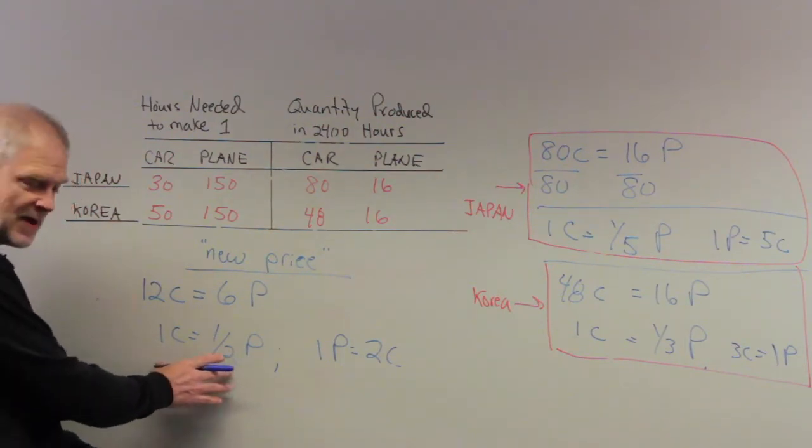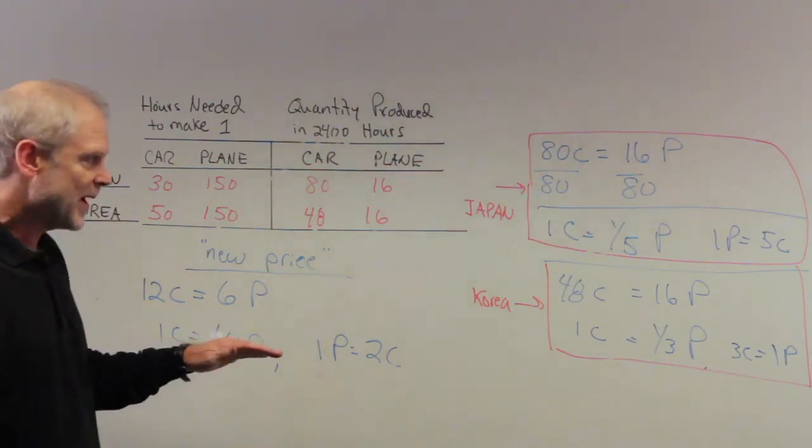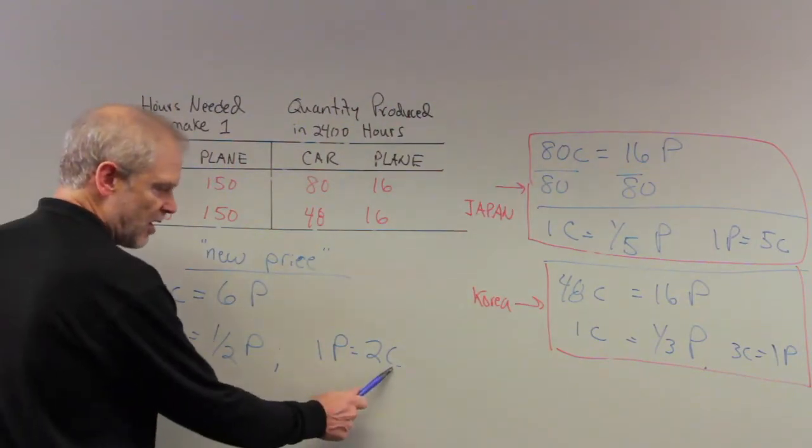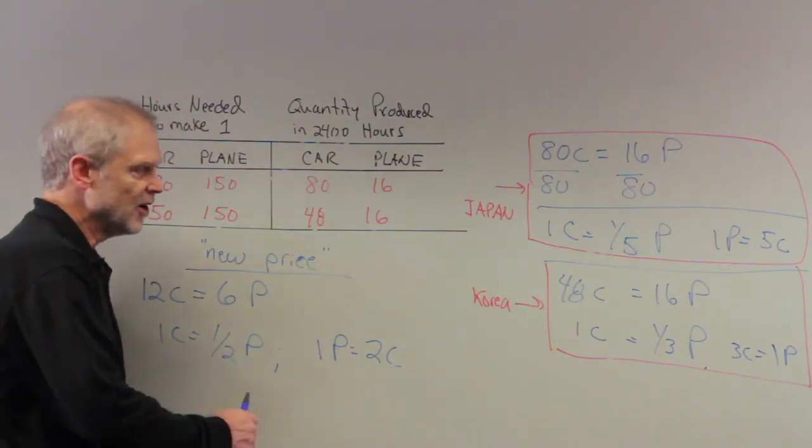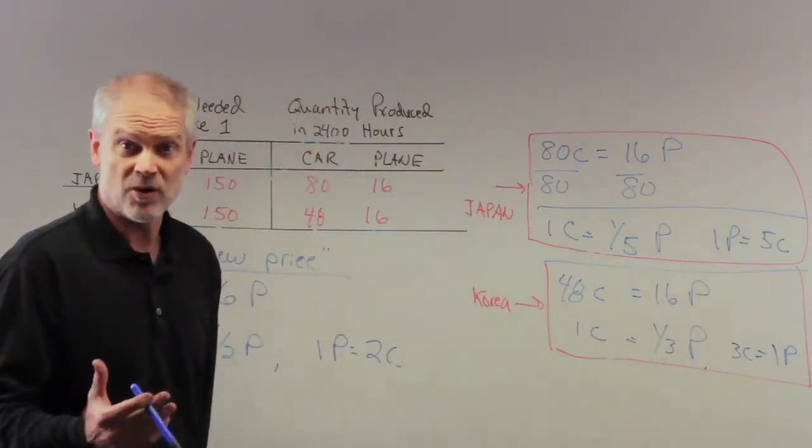So here, cars are really expensive, or meaning cars can buy a lot of planes. So Japan is going to say, whew, this is a good deal. I can just spend two cars to buy a whole plane here, whereas my own country, I had to spend five cars to, in essence, buy one plane.